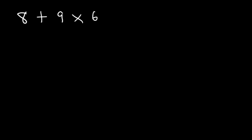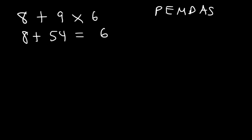Now let's go over a mixed review — examples containing addition, subtraction, multiplication, and division. Let's begin with 8 plus 9 times 6. Should we add or multiply first? According to PEMDAS, multiplication and division have more priority than addition and subtraction, so multiply before you add. 9 times 6 is 54, and 8 plus 54 is 62. If you add first: 8 plus 9 is 17, and 17 times 6 is 102 — not the same. 62 is the right answer.